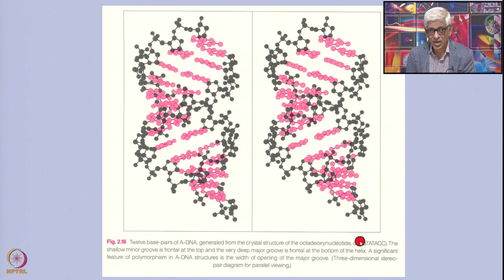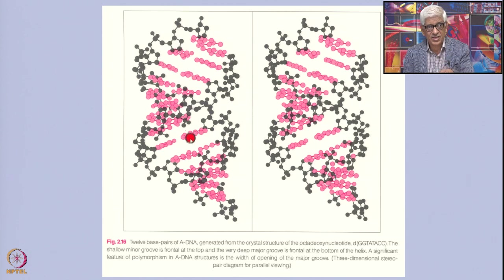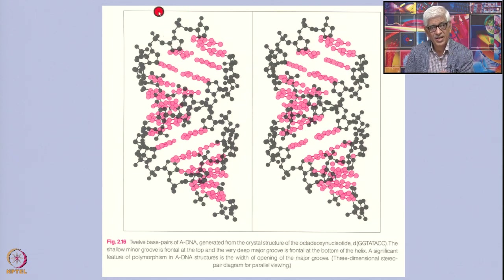One structure shown is a stereo picture of a 12 base pair A-DNA, with sequence deoxy-G, G, T, A, T, A, T, A, C, C, with the 5' end here and the 3' end here. This A-DNA structure is fat-looking, with base pairs tilted with respect to the helical axis — tilted in one direction in the top half and the other direction in the bottom half. Fiber diffraction data showed approximately 10 base pairs per complete turn.